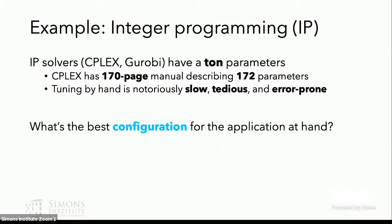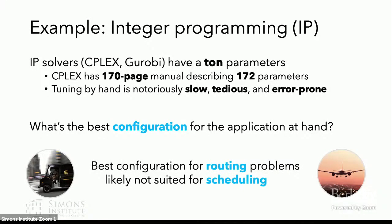So this raises a question, what's the best configuration of these parameters for my particular application domain at hand? Whatever configuration is best for solving the routing problems that a shipping company has to solve day after day is probably not particularly well-suited for solving the scheduling problems that an airline has to solve.